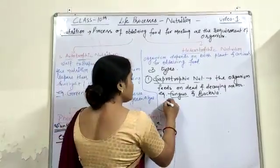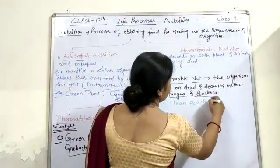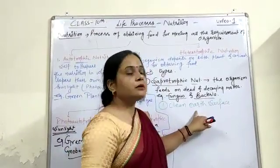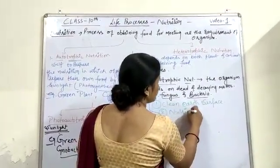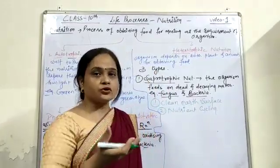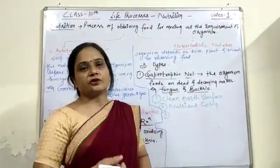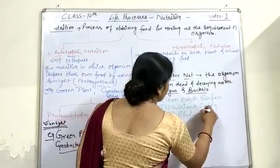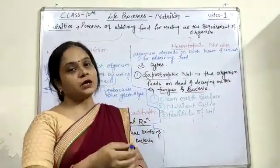Fungi and bacteria provide a safe environment on Earth. First, they clean the earth's surface by decomposing dead and decaying material. Second, they help in nutrient cycling — during decomposition, gaseous particles go into the atmosphere and the nutrient portion is added to the soil, enriching soil fertility. So fungi and bacteria play an important role in cleaning our environment.